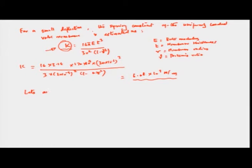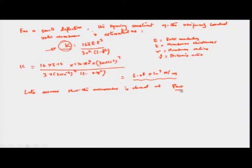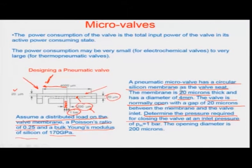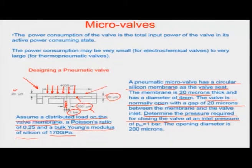Let us assume the micro valve is closed at an actuation pressure P_act, and this pressure falls on the top of this membrane. The closure can only happen if there is some kind of uniform loading — in terms of force per unit area or pressure — on the free end of the micro valve membrane.